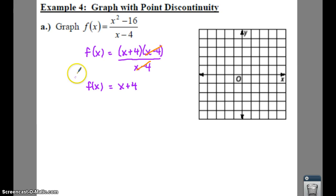Let's find out where the hole is first. The hole is at the point where x minus 4 equals 0. So if we say x minus 4 equals 0, add 4 to both sides, you're going to have x equals 4.